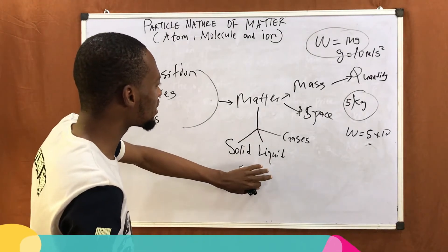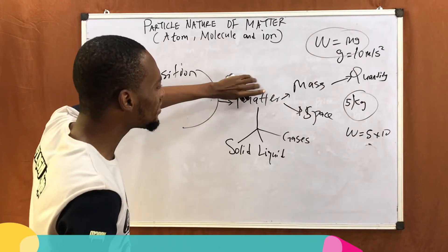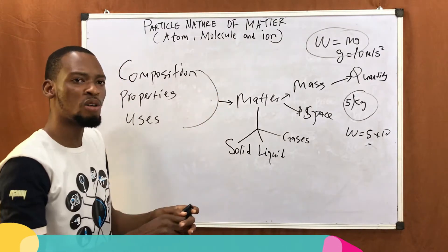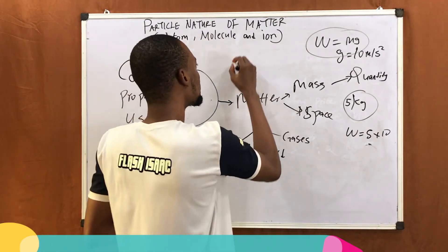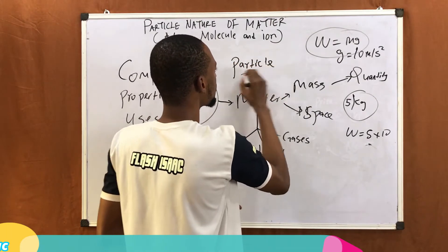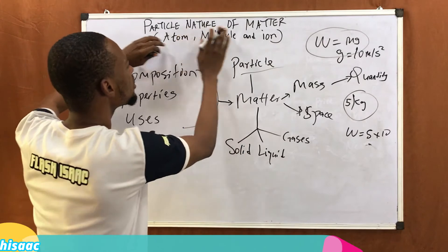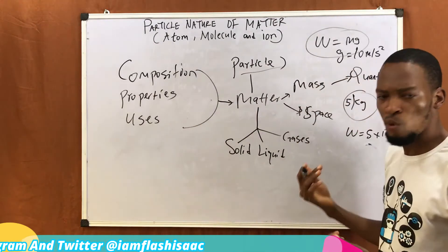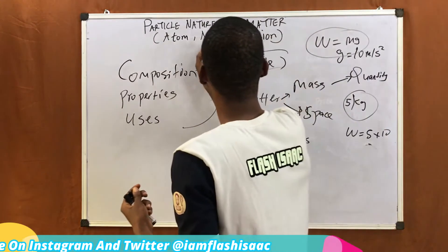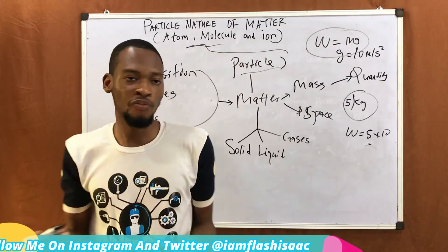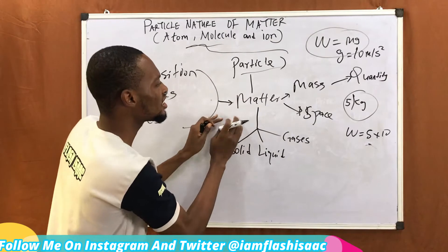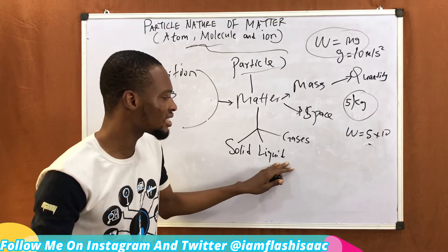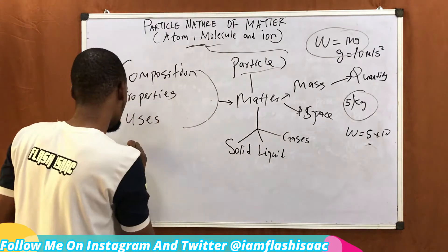So we know that matter exists in different states. Now there are different types of matter, and there is a belief — an idea — that matter is made up of particles. This is why we are studying the particle nature of matter. Scientists believe that matter is made up of particles, and these particles are atom, molecule, and ion. These are the particles that matter is made up of. Matter also exists in different types: elements, compound, and mixture.